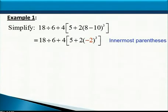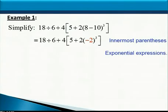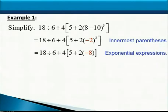Now that we've performed the innermost parentheses, we have to go inside the brackets. Inside the brackets we have addition, multiplication implied by the 2 next to parentheses, and the exponent of 3. Out of those three operations, the exponent should be performed first. So our next step is to raise negative 2 to the third power, which gives us negative 8.